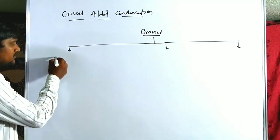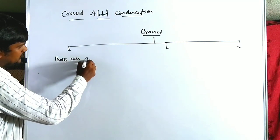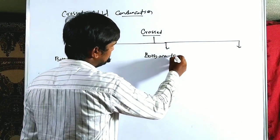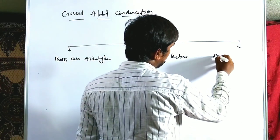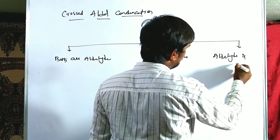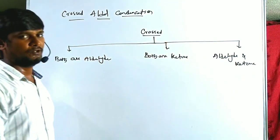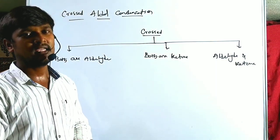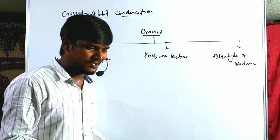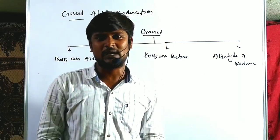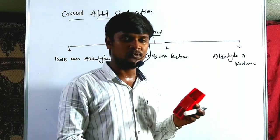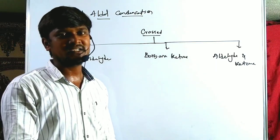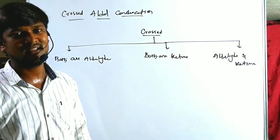Cross-aldol condensation: if both are aldehydes, or both are ketones, or one is aldehyde and another one is ketone — these are the three main cases. In the case of aldehydes, carbonyl compounds are again classified into two types: one is alpha-hydrogen-containing carbonyl compounds, another one is without alpha-hydrogen. The minimum requirement for aldol condensation is alpha hydrogen.